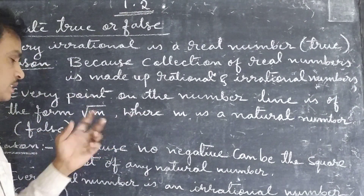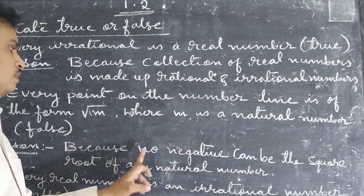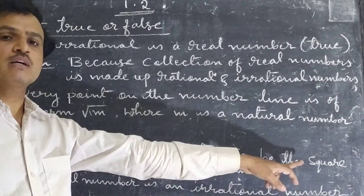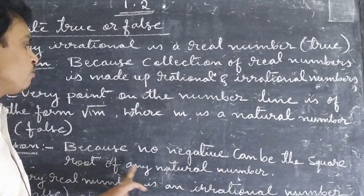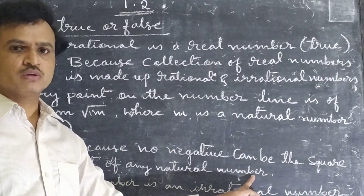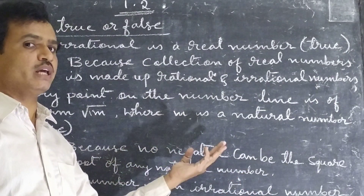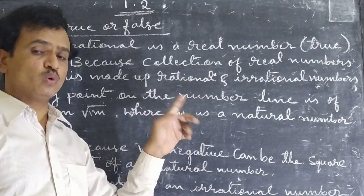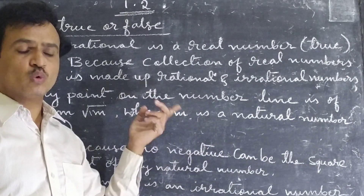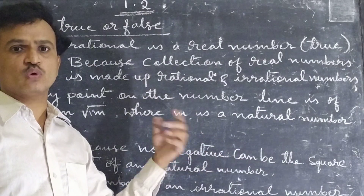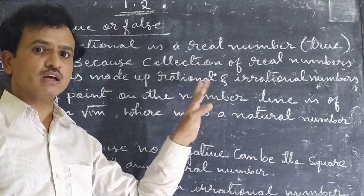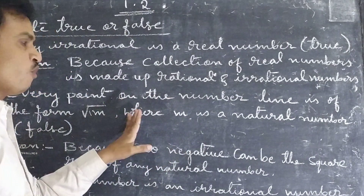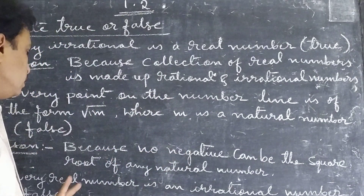Why is it false? Because no negative number can be the square root of any natural number. We cannot take any negative number — square root of minus 3, square root of minus 4. We cannot take negative numbers. So it is false.